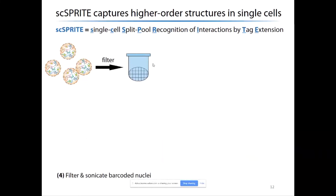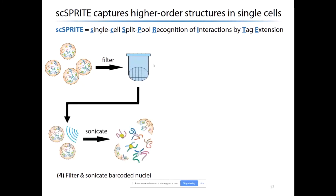Once we complete the cell-specific barcoding, we filter out any clumps that may have emerged from upstream processes in order to isolate single cells. We pass the nuclei through a filter to separate clumps from singles, yielding a batch of single-cell nuclei. From there, we choose 1,500 nuclei to proceed with the downstream steps of labeling DNA complexes. We then sonicate very lightly to break apart nuclei and reveal these DNA complexes, and at this point we don't care if they begin to mix together because all complexes already contain the initial cell-specific barcode.